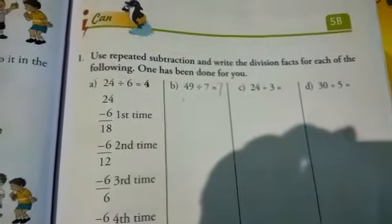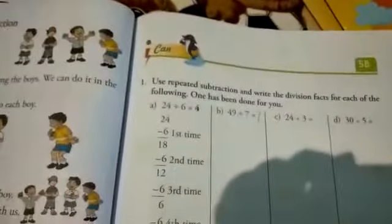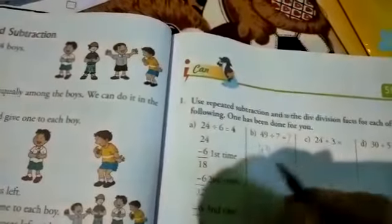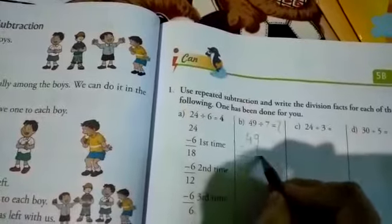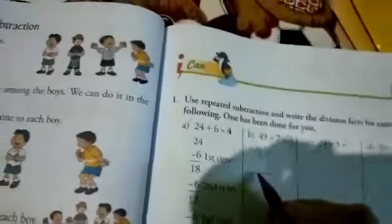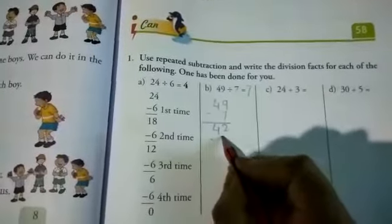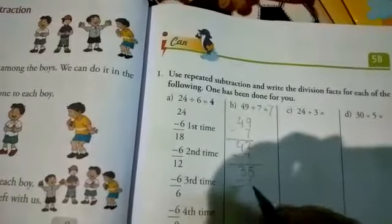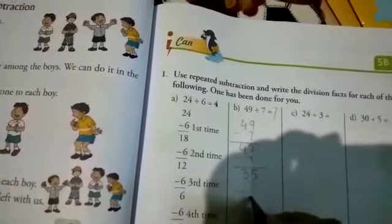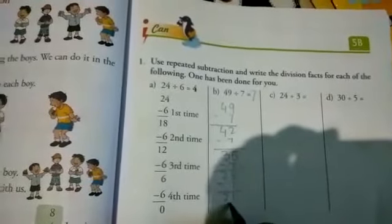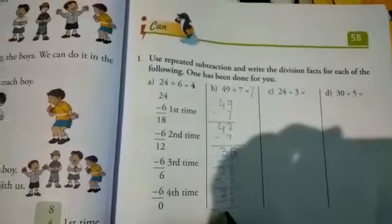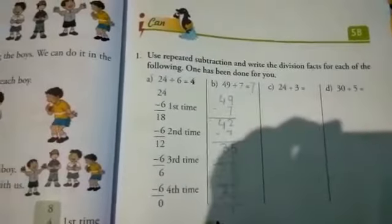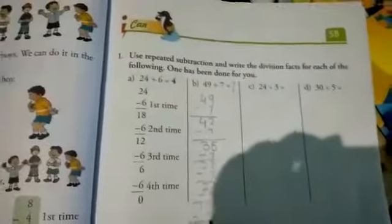49 divided by 7 equals 7. 49 minus 7 equals 42. Minus 7 is 35. Minus 7 is 28. Minus 7 is 21. Minus 7 is 14. Minus 7, 14 minus 7 is 7.